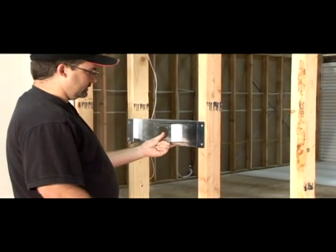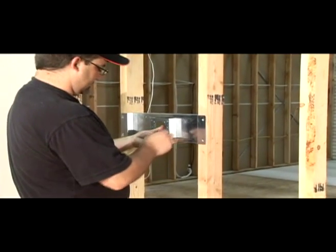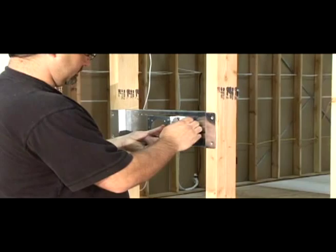First, place the mounting bracket between the wall studs or ceiling joists and secure with four drywall screws.